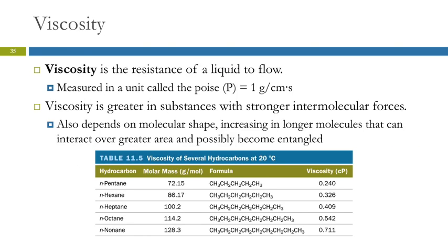Viscosity is the resistance of a liquid to flow. It's measured in poise, which are one gram per centimeter times second. If you have a substance with strong intermolecular forces, the particles are strongly attracted to each other, and it's going to be more resistant to flowing than something with low intermolecular forces. You can think of this as the thickness of a liquid. Honey pours very slowly, but water pours much more quickly — the forces of attraction between particles in honey are stronger than in water, and that's why it takes so long to come out.